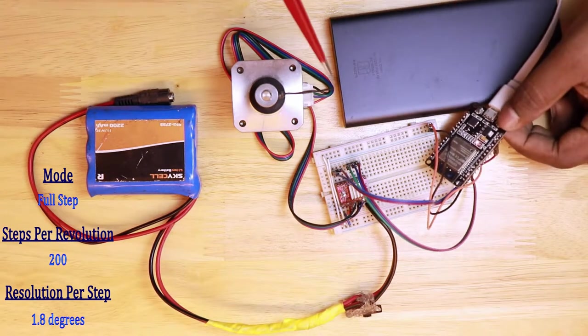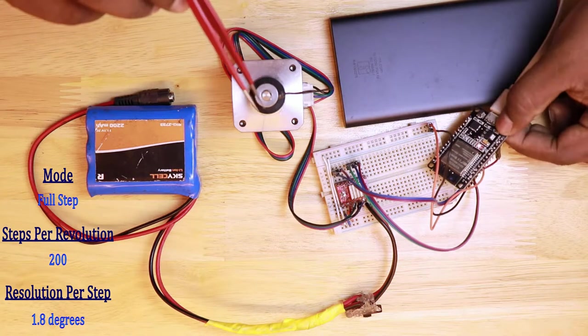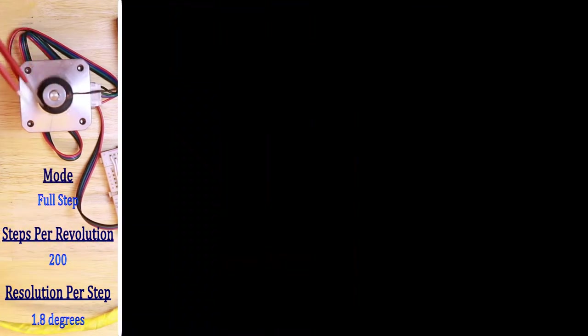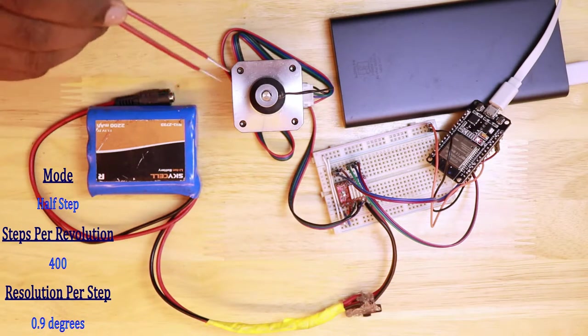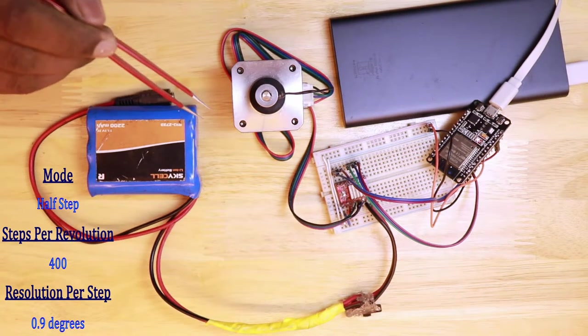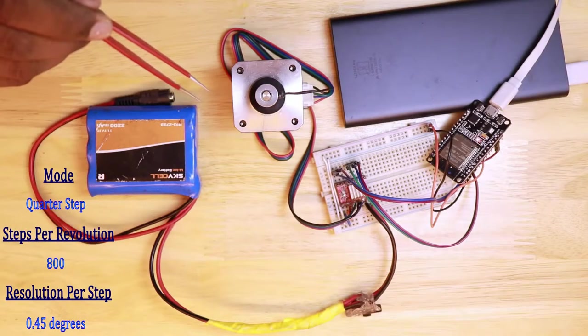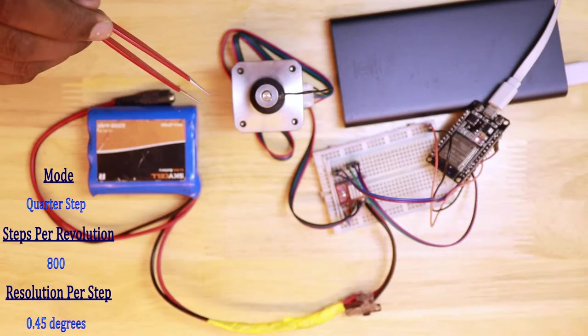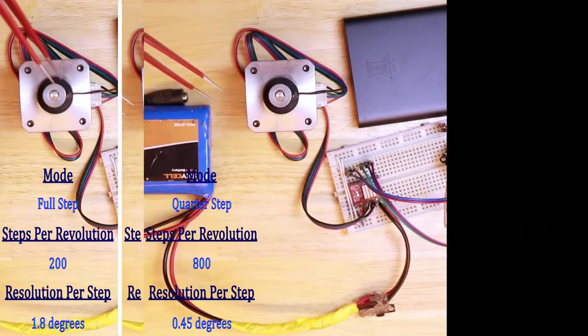First, the full-step mode. It takes 200 steps to make a complete revolution because each step has a resolution of about 1.8 degrees. In half-step mode, it takes 400 steps to cover one complete revolution, so each step has the resolution of about 0.9 degrees. In one-quarter-step mode, it takes about 800 steps to cover one complete revolution, so each step has a resolution of about 0.45 degrees.